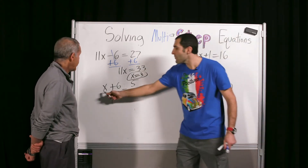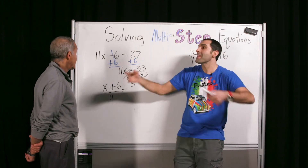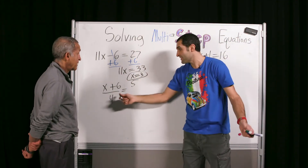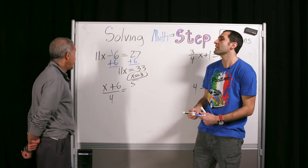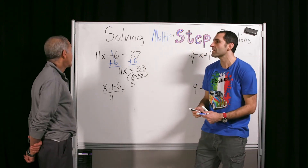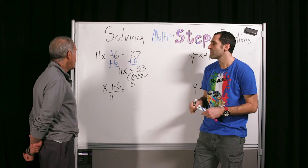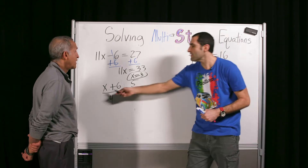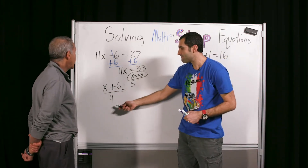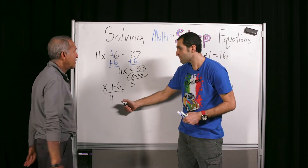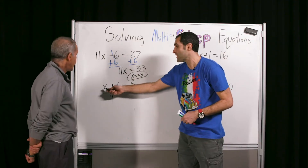There is a number, plus six, out there in space, divided by four, which results in five. Can you think of it? It's 14. 14 plus six is 20. X equals 14. Well done.